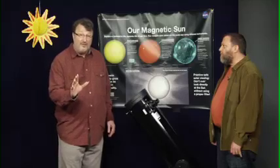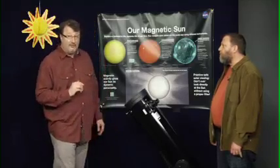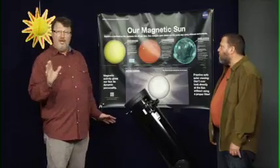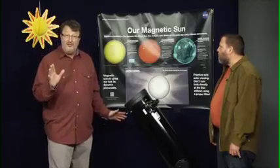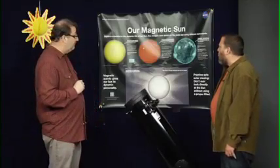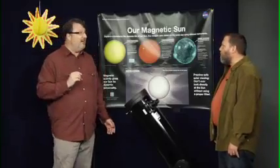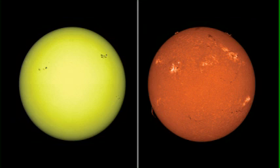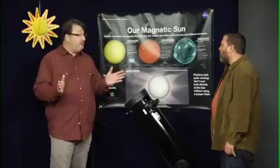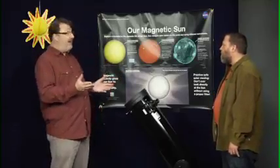All three were taken on the same day using different kinds of detectors. Now, who can tell me what they see on these images of the sun? Some bright spots and some dark spots. Do you notice any similarities? The bright spots are where the dark spots are on the left. Good eyes! The features you see are related to each other, and we're going to find out how.